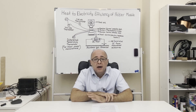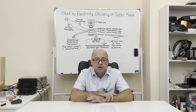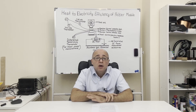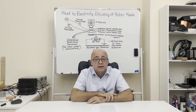Today I'll determine the heat to electricity conversion rate by measuring the temperature difference between both surfaces of the thermoelectric module for 40 degrees Celsius, 70 degrees Celsius, 90 degrees Celsius, and 110 degrees Celsius respectively.